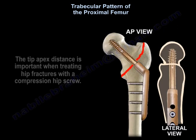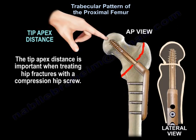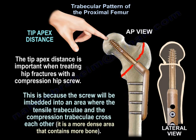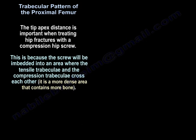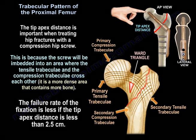The tip apex distance is important when treating hip fractures with a compression hip screw, because the screw will be embedded in an area where the tensile trabeculi and the compression trabeculi cross each other — a more dense area that contains more bone. The failure rate of the fixation is less if the tip apex distance is less than 2.5 cm.